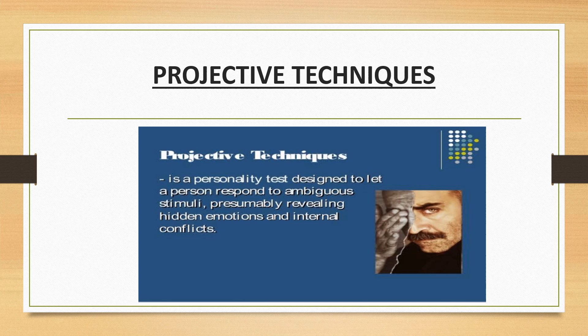The key differences between self-report measures and projective techniques are: self-report measures are objective tests while projective techniques are subjective tests; self-report measures use quantitative methods for scoring and interpretation while projective techniques use qualitative methods. Projective techniques also require rigorous training for interpretation.